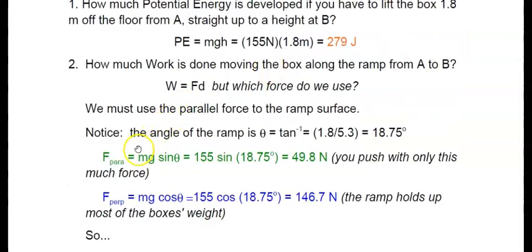Now we know that the parallel force, which is MG sine theta, is 155 Newtons times the sine of that 18.75 degrees. That equals 49.8 Newtons. You are pushing with this much force. You're going to counteract this force so that the force you push up the ramp with is equal and opposite to the force parallel pulling down the ramp.